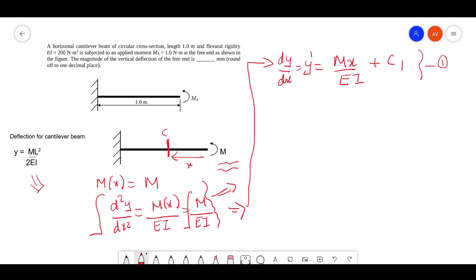So this is our equation one. Now again further integrate both sides. What do you get? y dash will turn into y equals Mx²/2EI plus C1x plus C2, the next constant of integration.